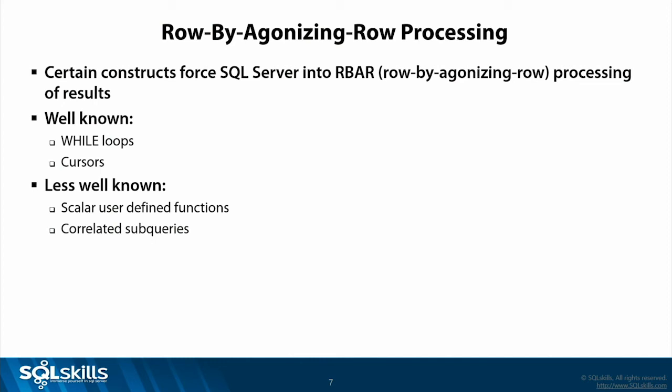Some of the less well-known row-by-row constructs: scalar user-defined functions. A scalar UDF iterates row by row even if it does absolutely nothing — it's going to impact performance. I call scalar UDFs 'easy money' because I could spend the rest of my life working with customer databases that have scalar UDF issues, eliminating performance problems, and I would never be without work. It's just such an inherent part of the design of certain systems that is problematic.